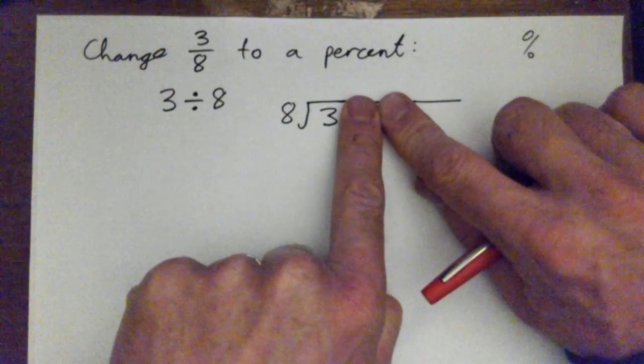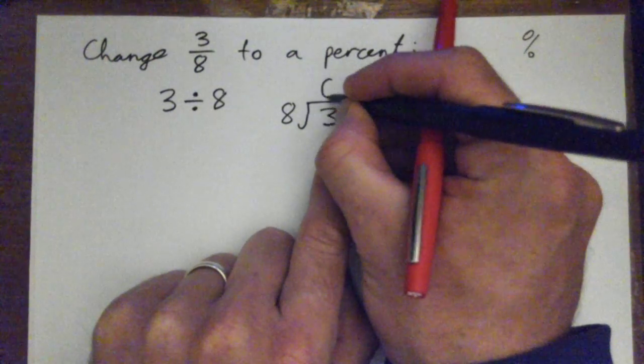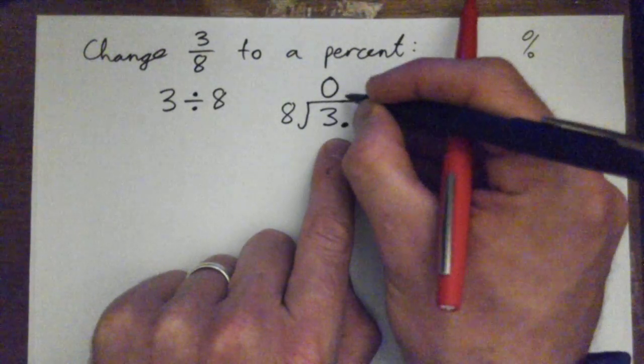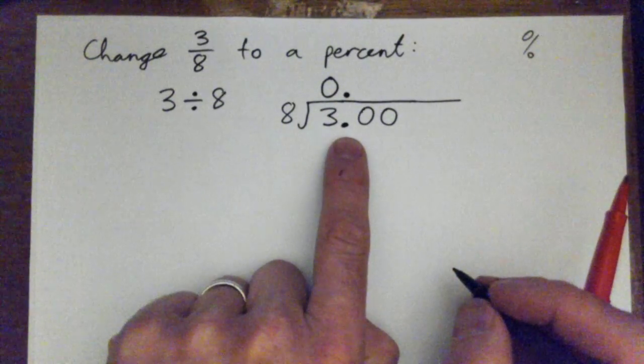So what's eight into three? Zero. So that goes up there. This decimal point always follows and it goes here. Does that make sense? This decimal point always goes up above that.